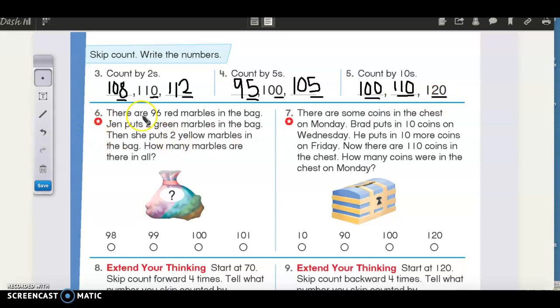There are 96 red marbles in a bag. Jen puts two green marbles in the bag. Then she puts two yellow marbles in the bag. How many marbles are there in all? So you can do addition with this. But because that is kind of a large number to add, you can skip count by twos to help you solve. So go ahead, pause the video, solve this, and then unpause when you're ready for the answer. All right, you ready? So if I had 96, and then I skip count by twos because she put in two more, that goes to 98. And then put in two more, that would be 100. Did you get 100? Good job.